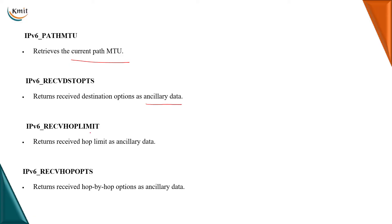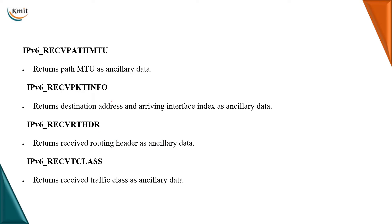IPv6 receive hop limit: this option returns the received hop limit, just like the time-to-live in IPv4. IPv6 receive hop-by-hop options returns hop-by-hop options as ancillary data. IPv6 received path MTU returns the path MTU as ancillary data. IPv6 receive packet information returns the arriving interface index and destination. IPv6 receive routing header returns the routing header. The IPv6 traffic class is also returned.